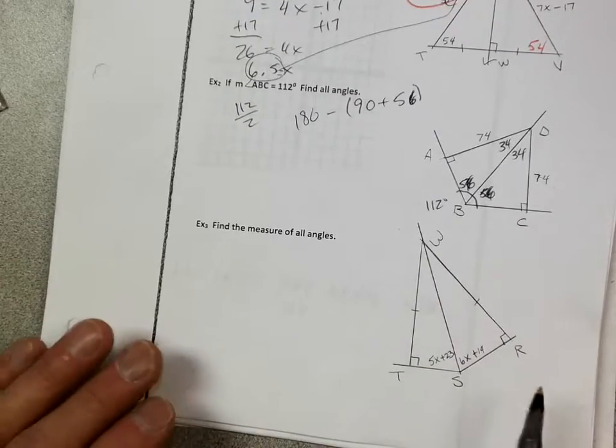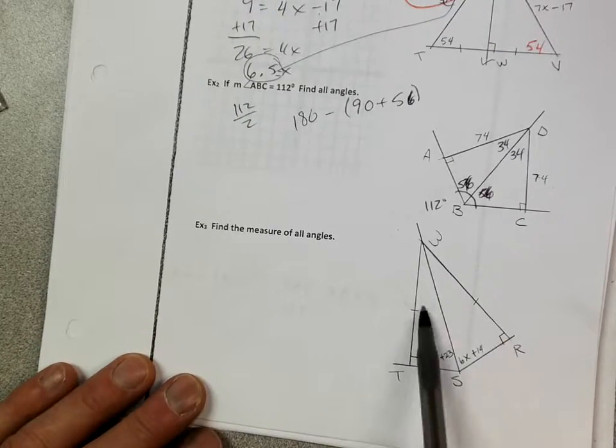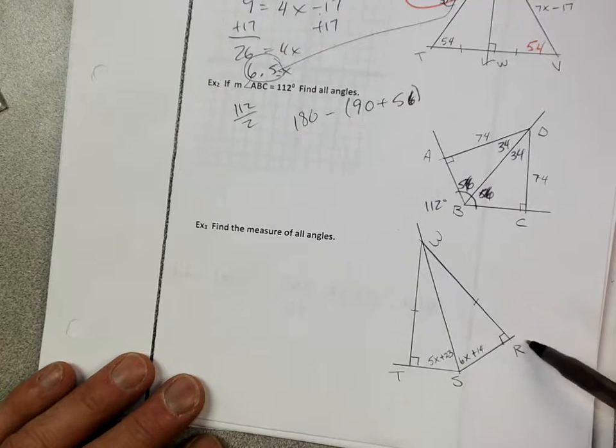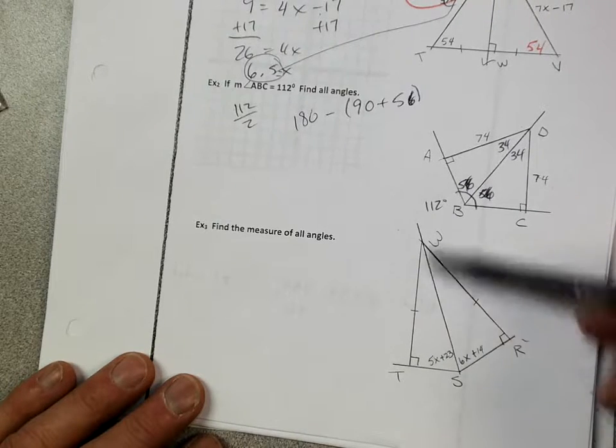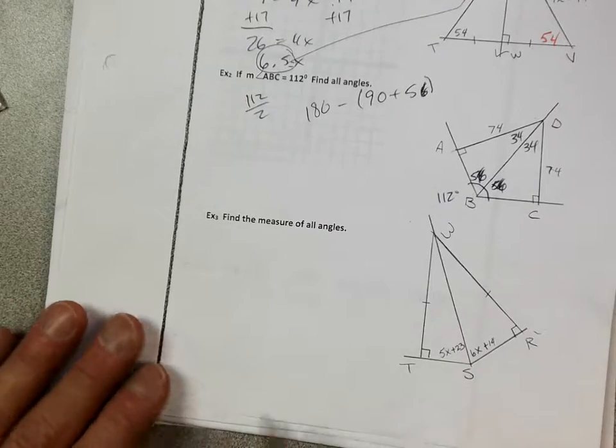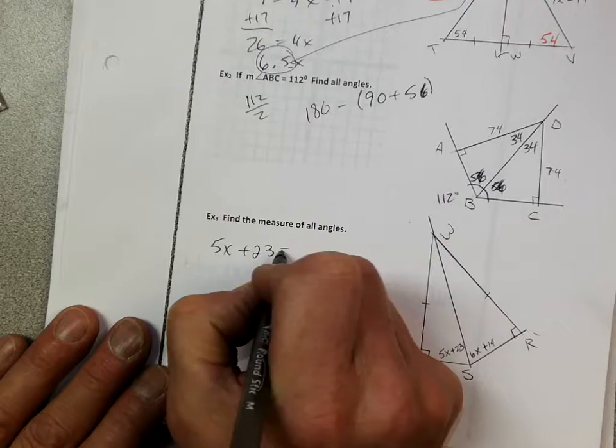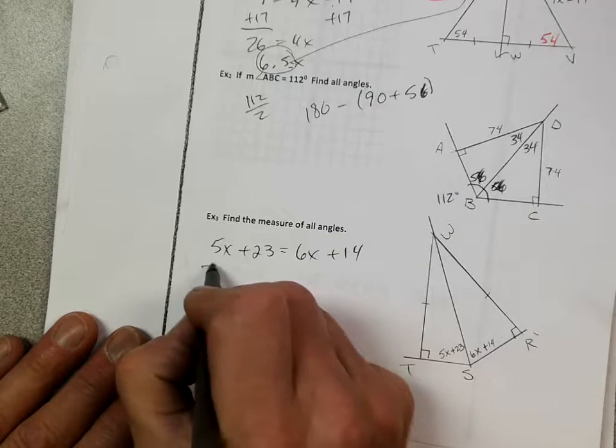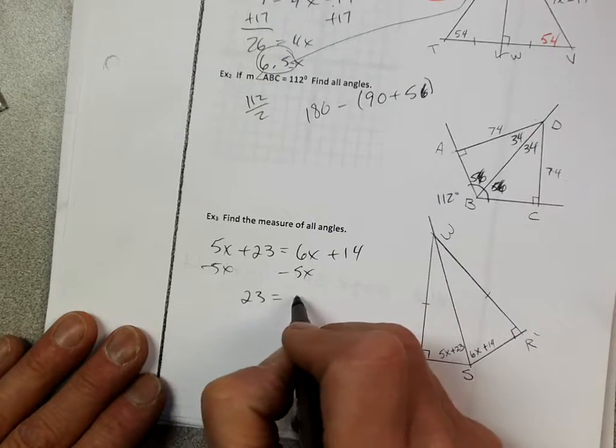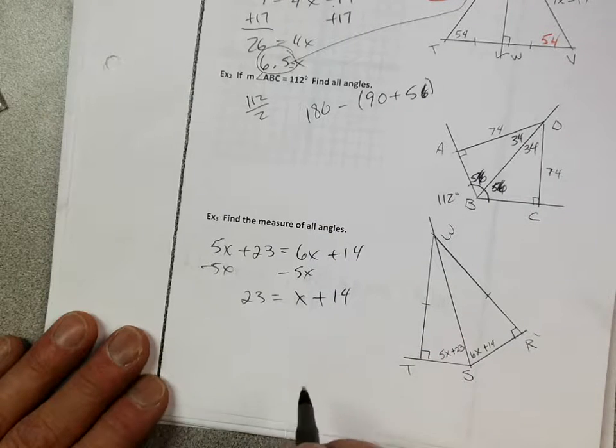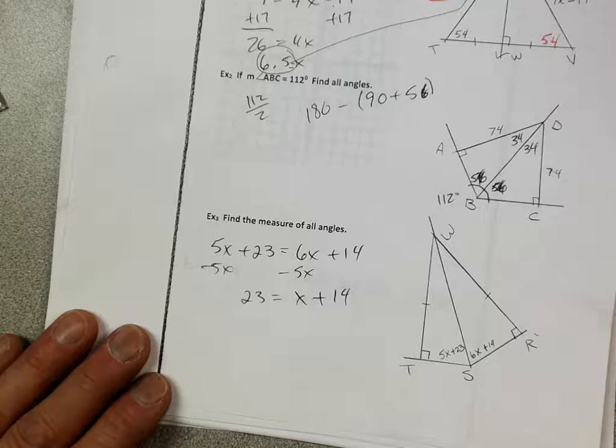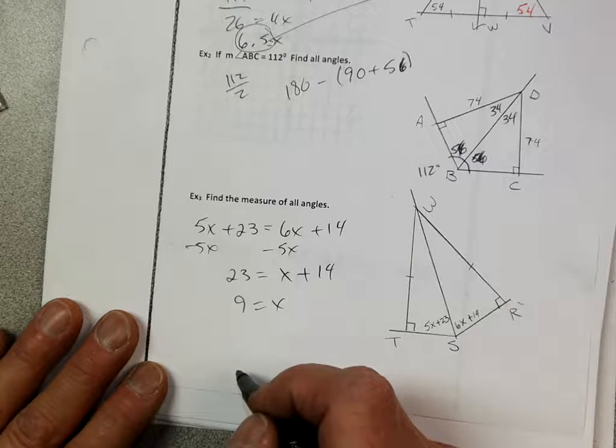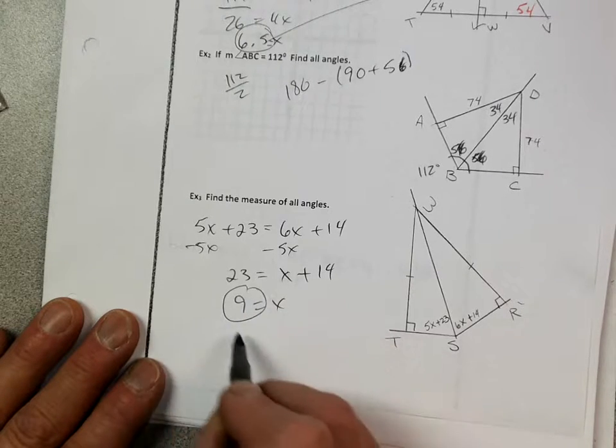So example three, same thing. If this angle's 90 and this angle's 90, if this is equal to this one, then we know the two triangles are congruent, right? Which would make these two angles equal, right? One more time. This side's equal to this side, right? That's 90, that's 90, and this side's equal. So we know they have to be equal. So I can just set my 5x plus 23 equal to my 6x plus 14 minus 5x minus 5x. I get a 23 equals an x plus 14 minus 14 should be 9. Yep, x equals 9. Okay, so now let's plug that in. Am I going too fast? Am I okay?